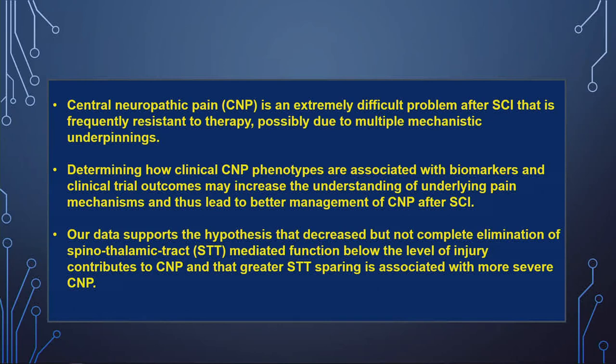Unfortunately, for those of us who study and treat this, it's a very difficult problem — frequently resistant to therapy, probably because of so many mechanisms. If we can determine how clinical phenotypes are associated with biomarkers and clinical trial outcomes, this may increase understanding of underlying pain mechanisms and lead to better management of central neuropathic pain after spinal cord injury. Our data support the hypothesis that decreased but not complete elimination of spinothalamic tract-mediated function below the level of injury contributes to central neuropathic pain, and that greater spinothalamic tract sparing is associated with more severe central neuropathic pain.